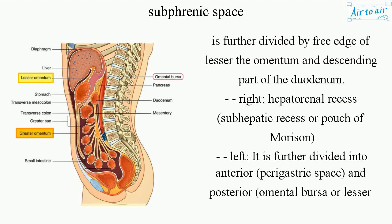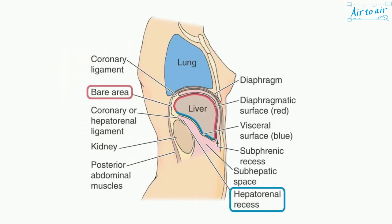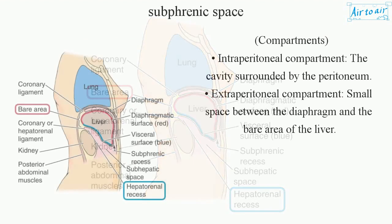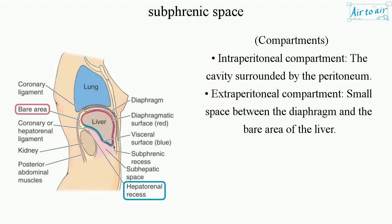The left infrahepatic portion is further divided into anterior, paragastric space, and posterior — the omental bursa or lesser sac of the peritoneum. Regarding compartments: the Intraperitoneal compartment is the cavity surrounded by the peritoneum, while the Extraperitoneal compartment is the small space between the diaphragm and the bare area of the liver.